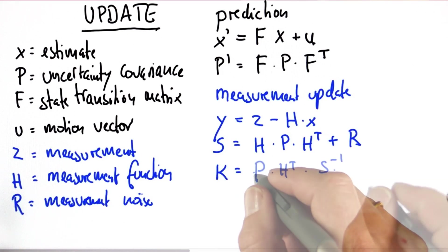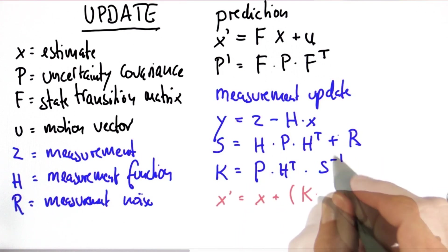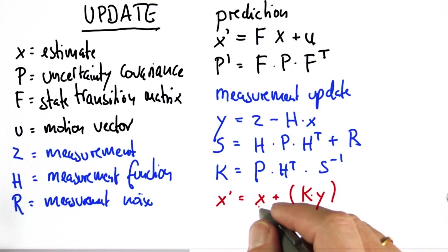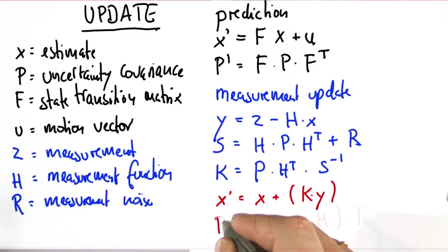And then finally, we actually update our estimate and our uncertainty, using what ought to be the most cryptic equation that you've seen in a long time.